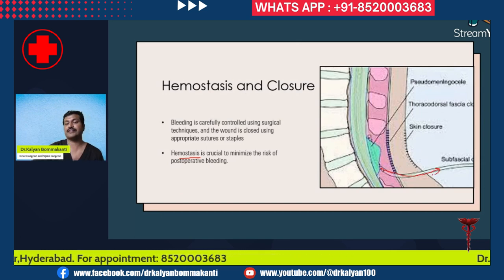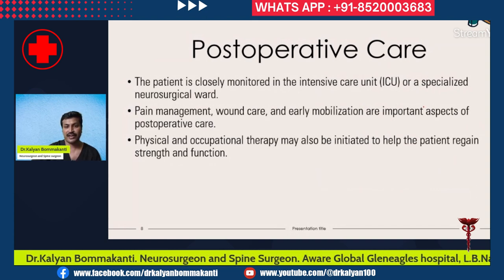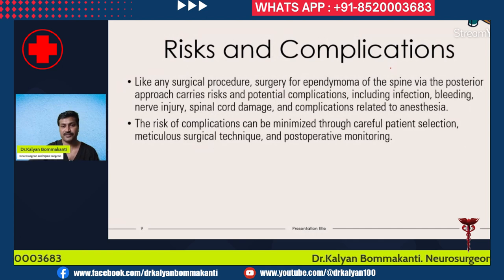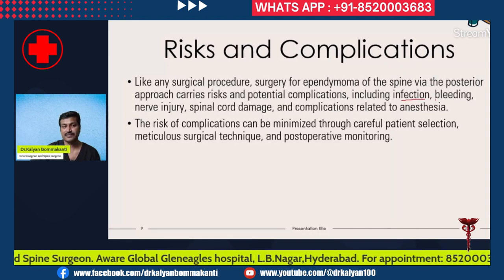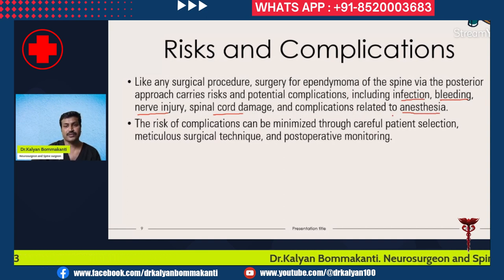A drain is placed so that any bleeding comes out through it. The patient is closely monitored in an intensive care unit or a specialized neurosurgical ward. Pain management, wound care, and early mobilization are important aspects of postoperative care. Physical and occupational therapy may also be initiated to help the patient regain strength and function. Like any surgical procedure, surgery for spinal ependymoma via the posterior approach carries inherent risks including infection, bleeding, nerve injury, spinal cord injury, and anesthesia-related complications. These risks can be minimized through careful patient selection, meticulous surgical technique, and postoperative monitoring.